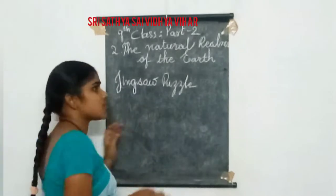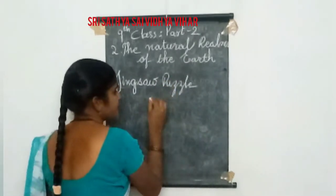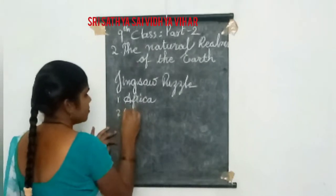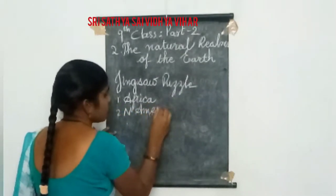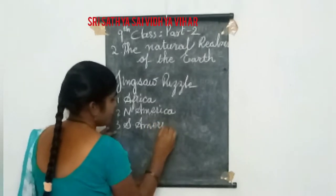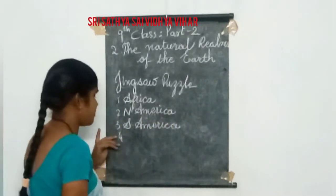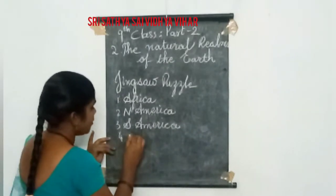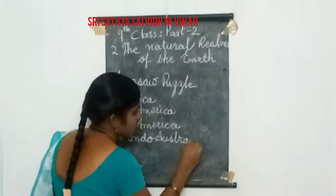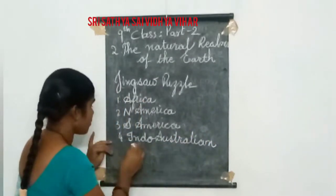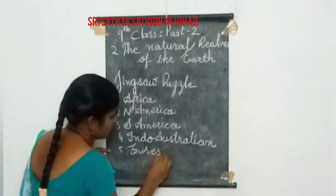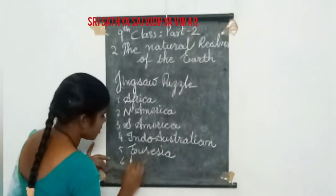The six major plates are: first, Africa; second, North America; third, South America; fourth, Indo-Australian; fifth, Eurasia; and sixth, Pacific.